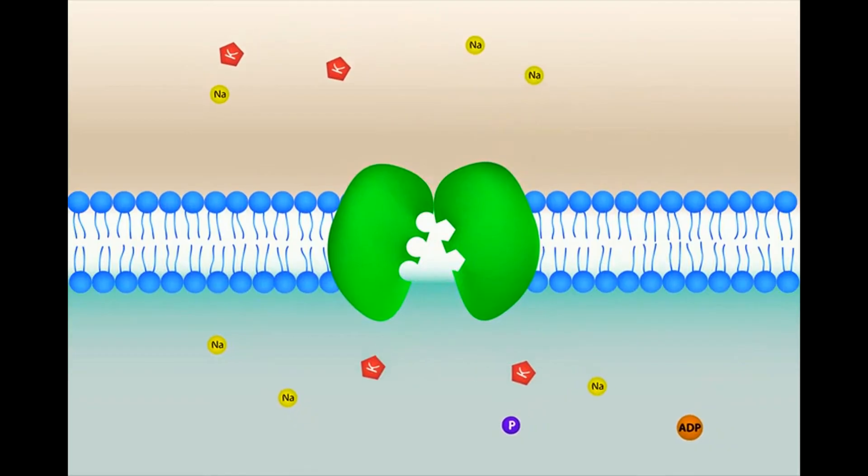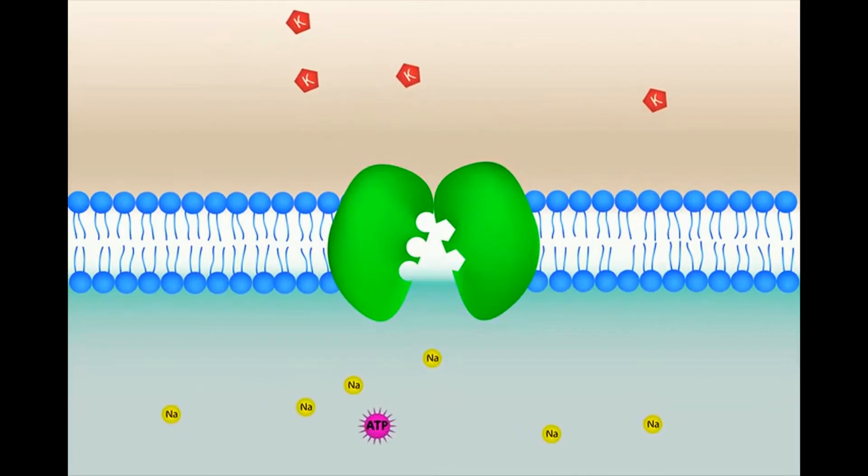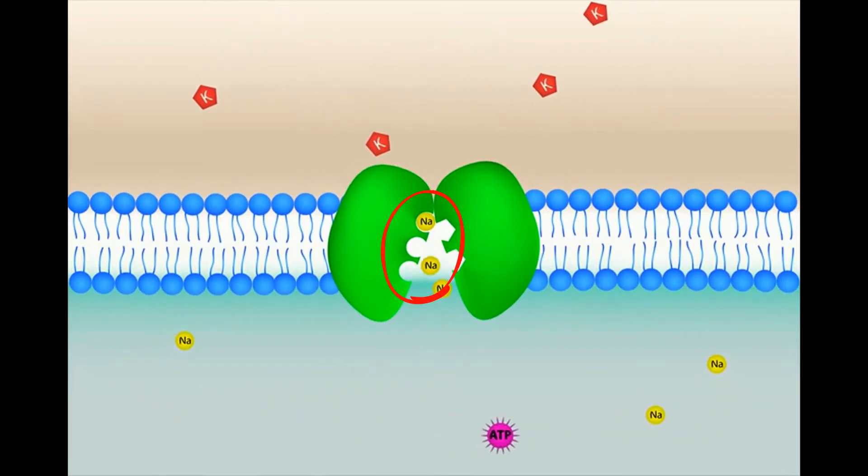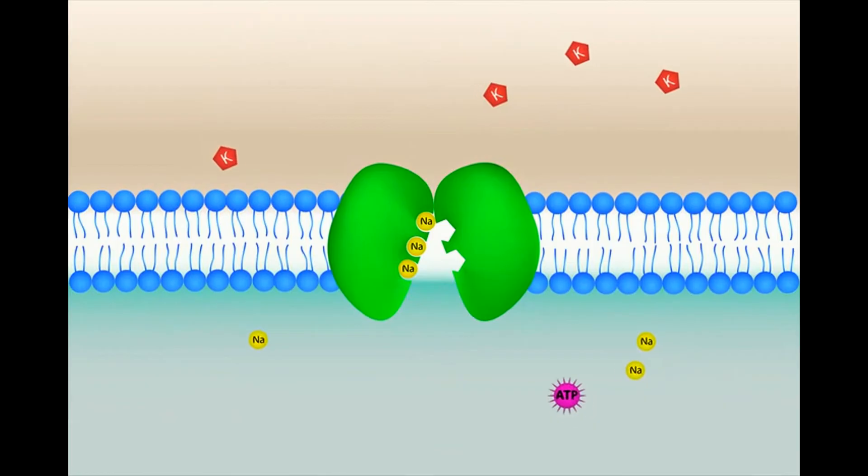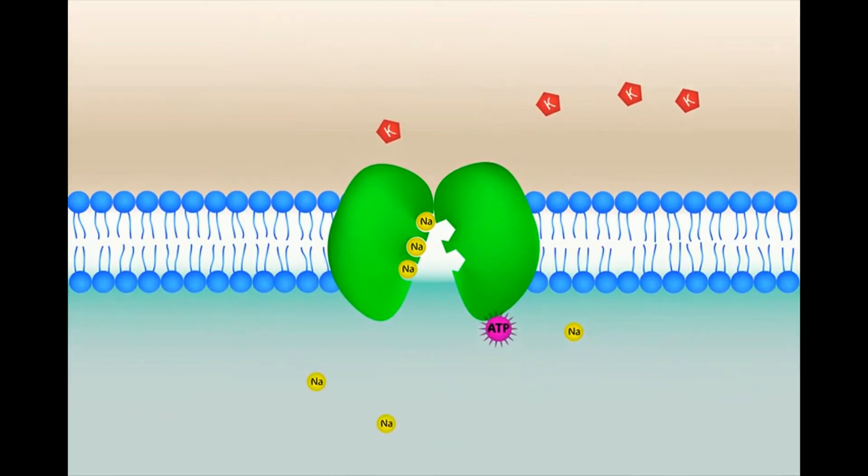It begins with three sodium ions which are positioned in the carrier protein. An ATP molecule splits and releases phosphate.